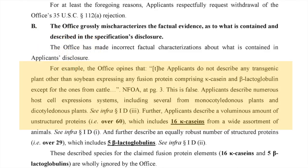We've been talking about the claims — the name of the game is the claim. This third type comes from application 17,039,759, and there is a section 112 written description rejection. The applicant says the office action opines that the applicants do not describe any transgenic plant other than soybean expressing any fusion protein comprising kappa-casein or beta-lactoglobulin except for ones from cattle. The applicant says this is false.